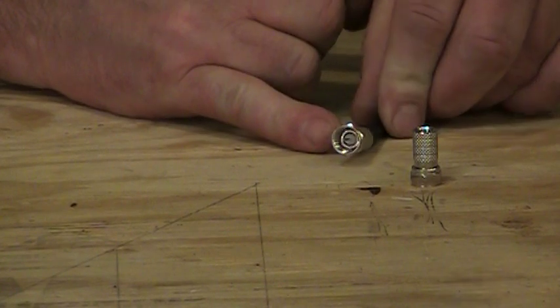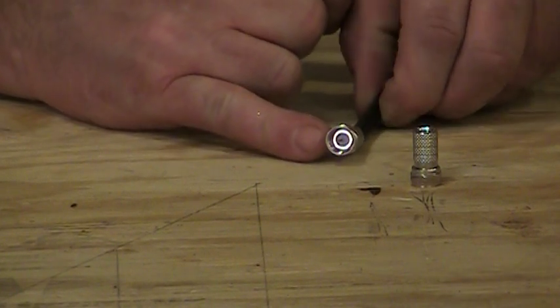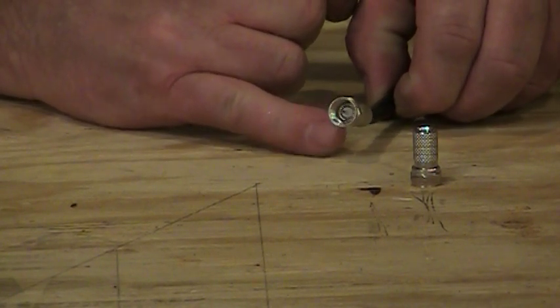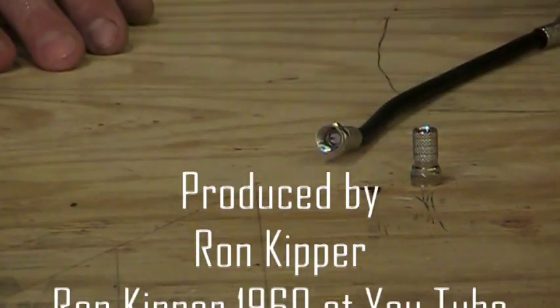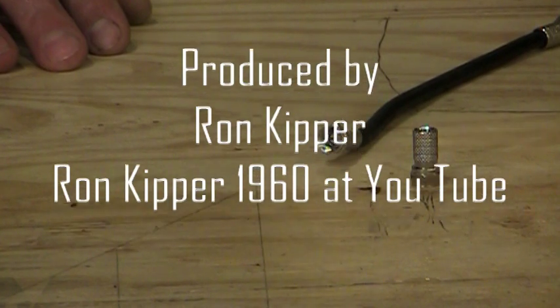And yeah, I got it on. You can see that the white dielectric is even with the little hole inside the connector, which is what we want to see happen. And there you go. It's a properly installed twist-on coax connector.